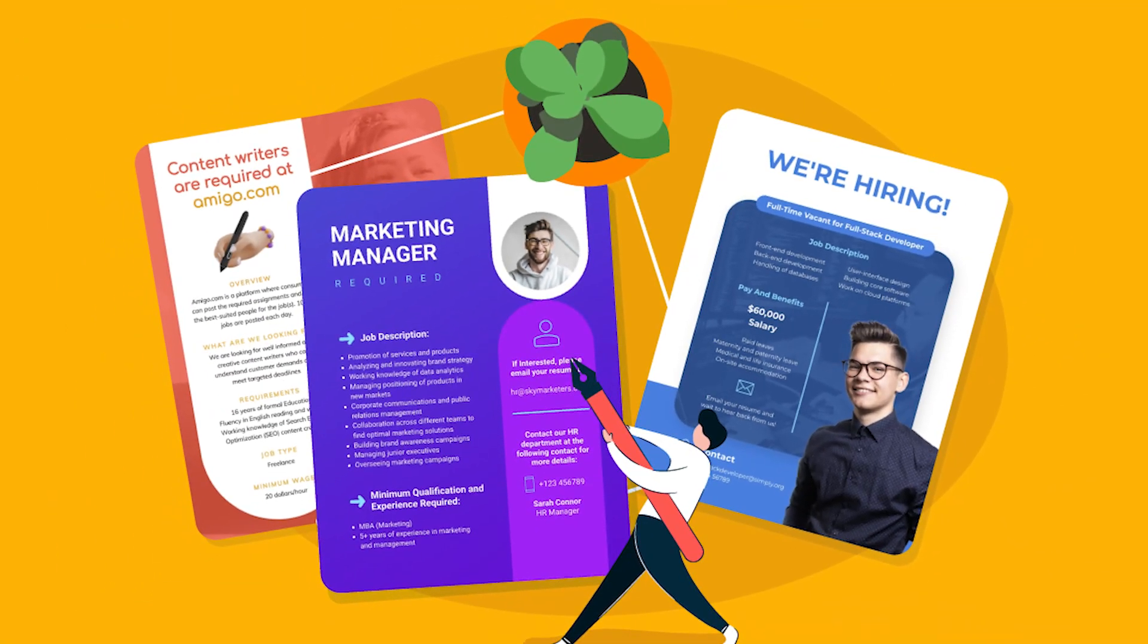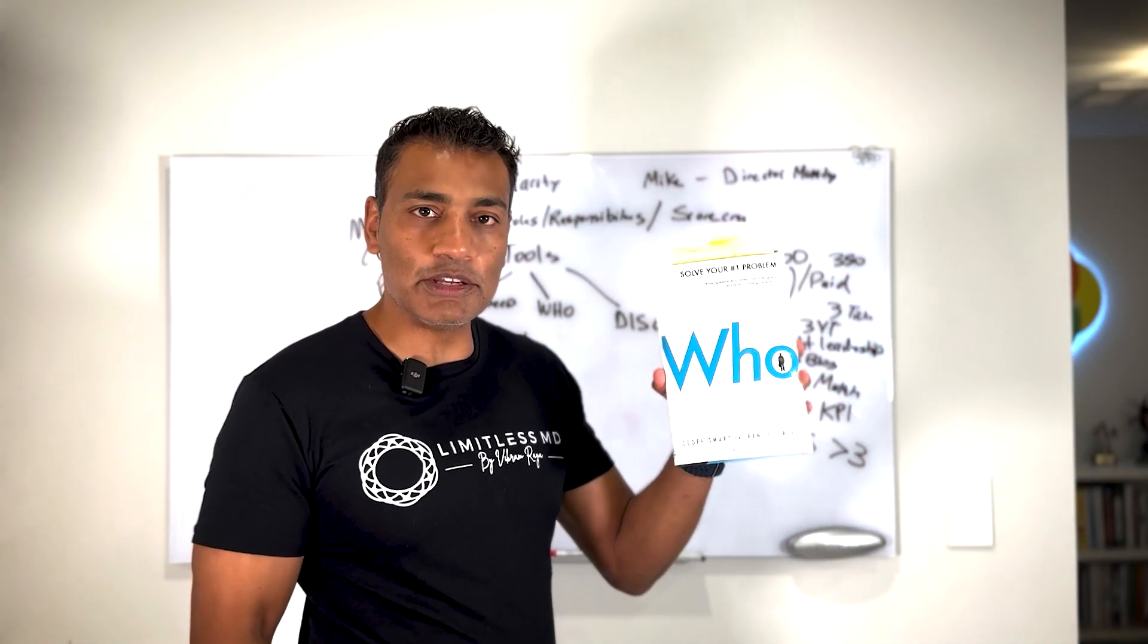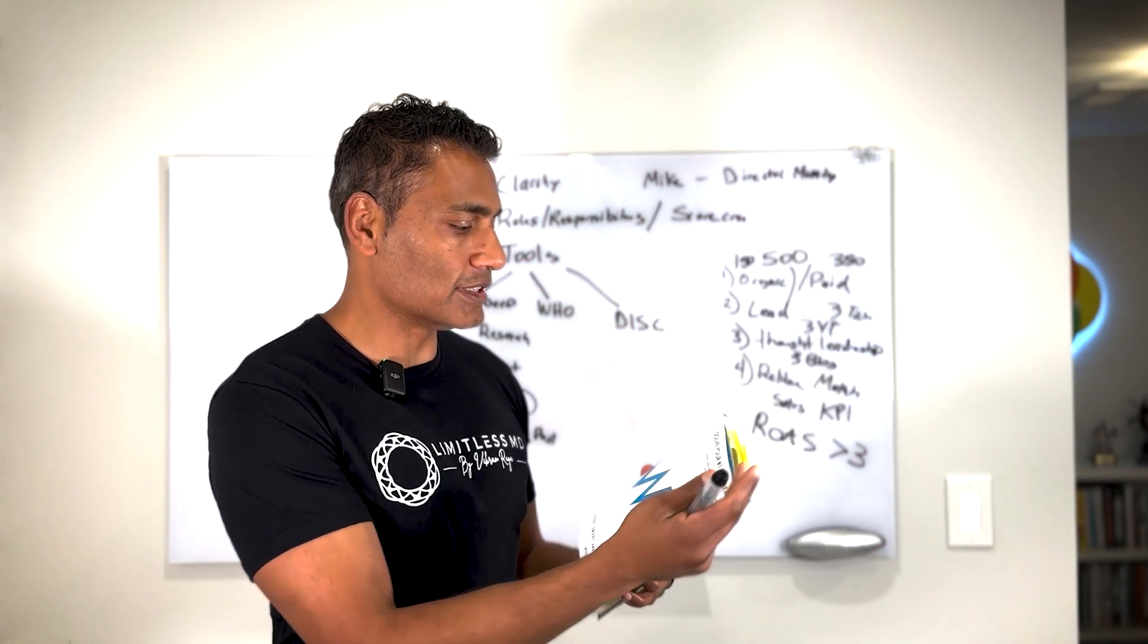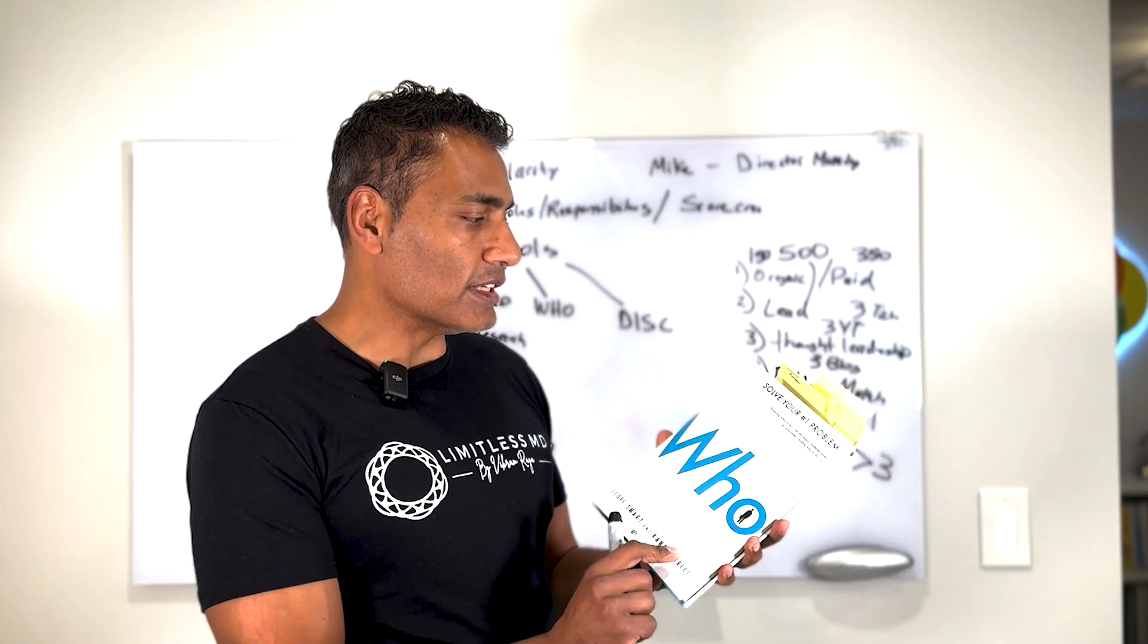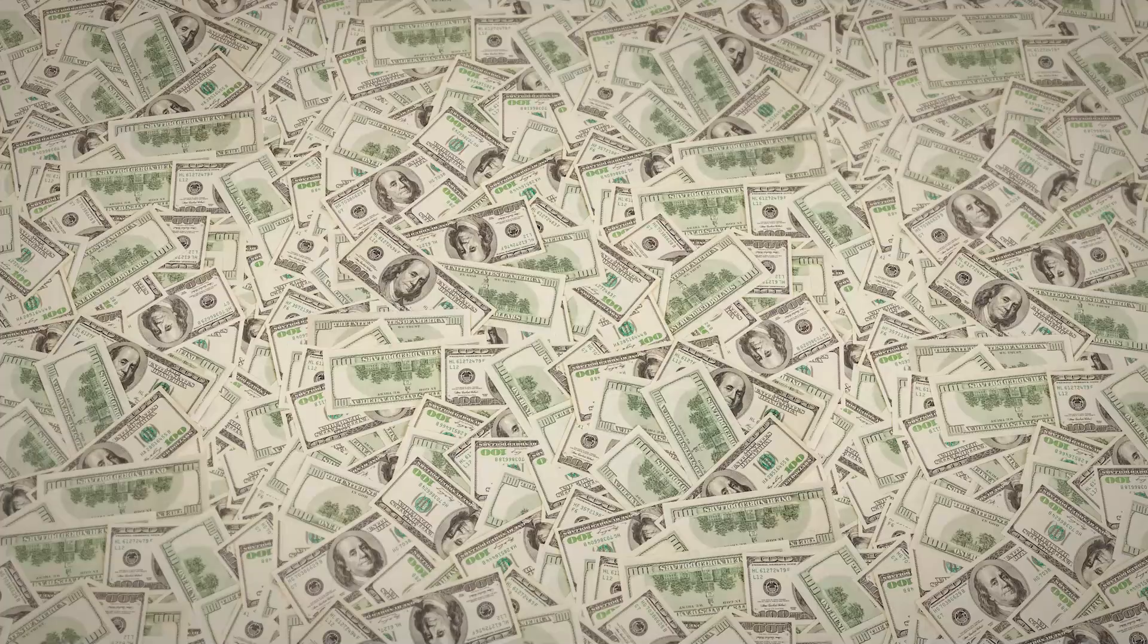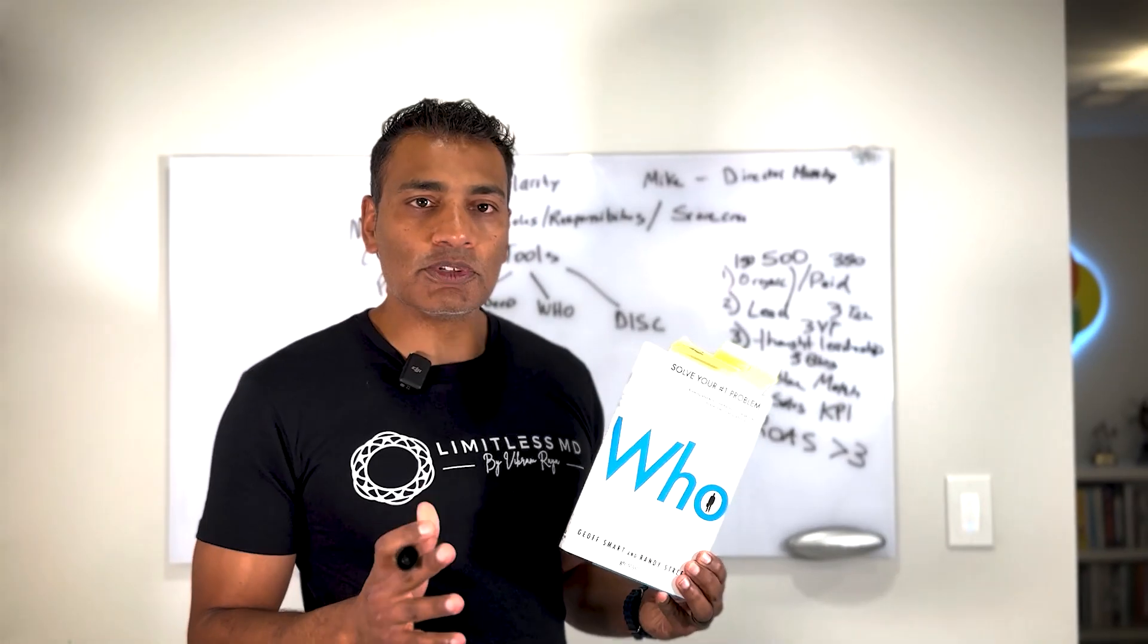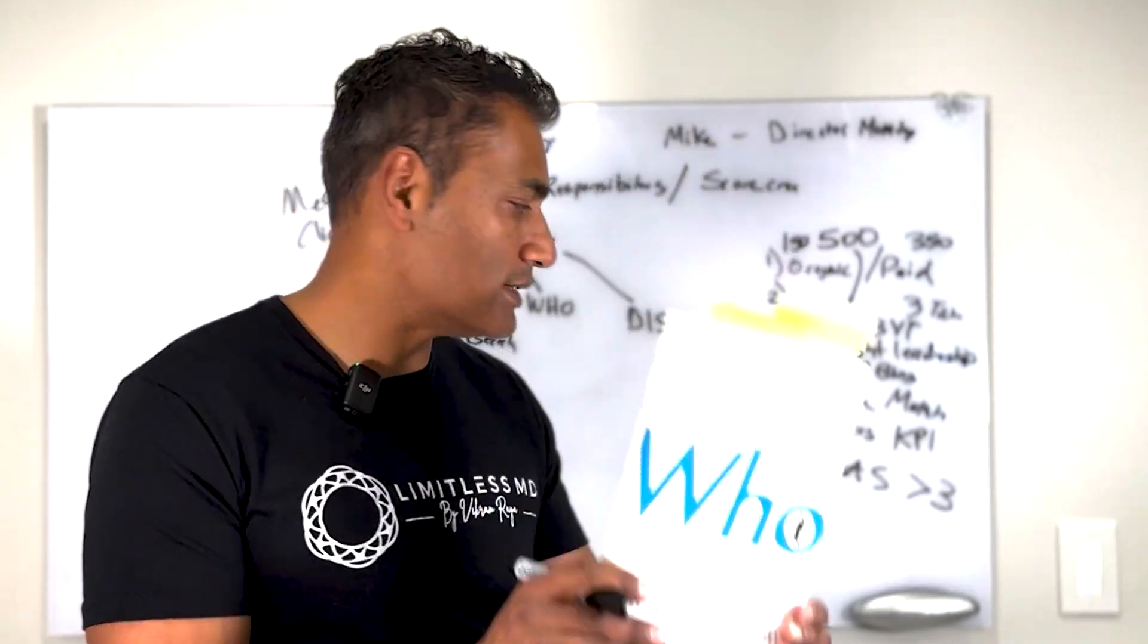The number two is the WHO method for hiring. So as you can see here, I use this book quite often. There's all the stickies here. This is by Jeff Smart and Randy Street. This is the number one book for hiring. It has saved me hundreds of thousands of dollars of bad hires and has helped me create multiple seven and eight figure companies. So highly recommend this.